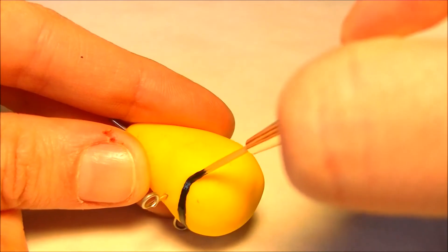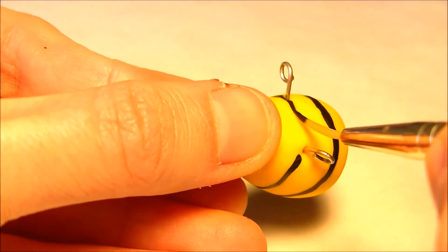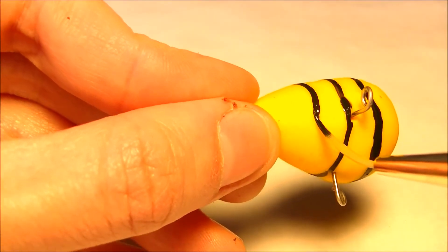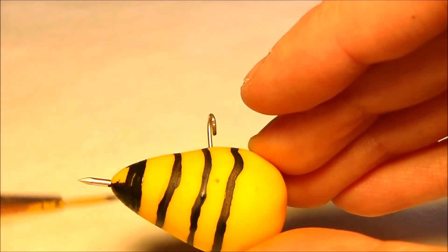Now we're going to paint on the bee stripes. I like to paint on the stripes before putting on the wings just so I don't risk getting any black paint onto the wings. The stripes are a little hard to put on but it gets easier with time. Stick with it.